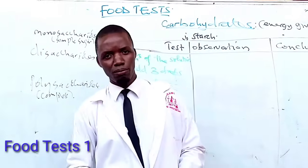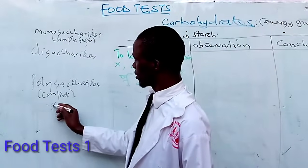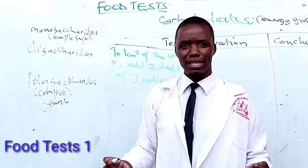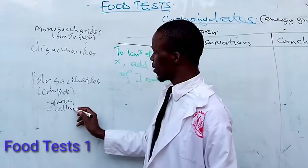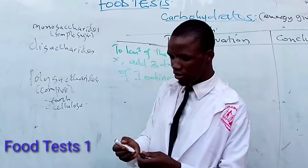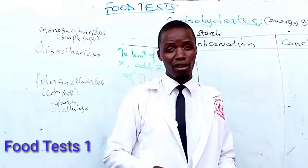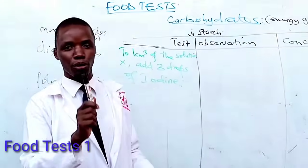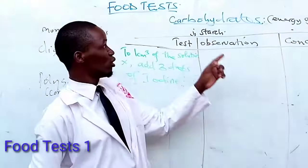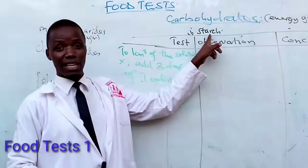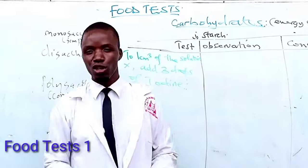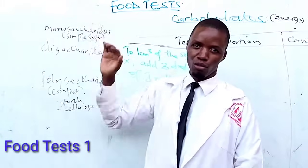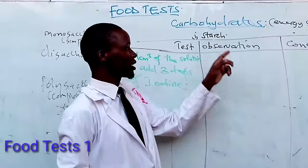Today we are going to focus on complex sugars. One of these complex sugars is starch. We also have many other complex sugars, for example cellulose, which is found in the cell wall of plant cells. In this episode on food tests, we are going to look at how we test for a polysaccharide — specifically starch. We will also look at how we test for monosaccharides in later episodes.